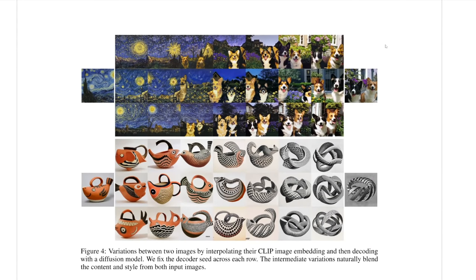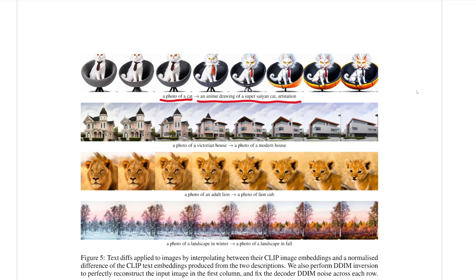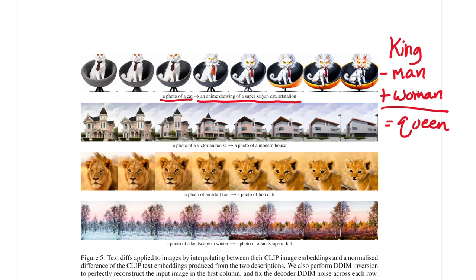Diffusion models also allow you to do things like image interpolation. Two separate images were encoded with CLIP, the generated embeddings were interpolated, then passed through the decoder — and what you can see is a very smooth transition from one image to the other. Similarly, the exact same thing can be shown when interpolating between two text embeddings — for example, going from a photo of a cat to an anime drawing of a Super Saiyan cat. This reminds me of text embeddings where you could add or subtract words to get new semantically equivalent words — like subtracting 'man' from 'king' and adding 'woman' gives you 'queen.'